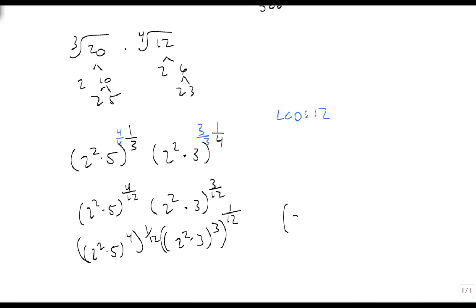So this gives me 2 squared times 5 to the 4th times 2 squared times 3 to the 3rd all to the 12th power. Well let's move our power in. So this becomes 2 to the 8th times 5 to the 4th times 2 to the 6th times 3 cubed all to the 1 12th.